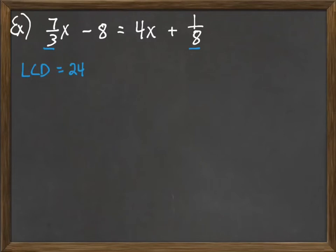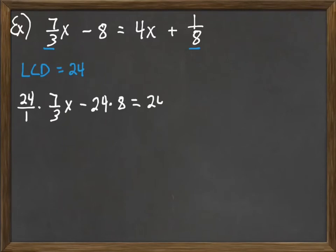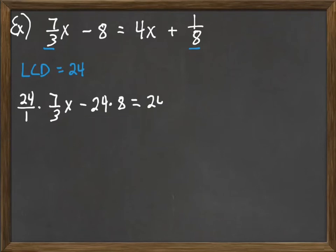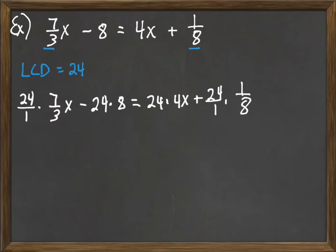We're going to make the fractions go away by multiplying the whole equation — that means both sides, each piece of both sides, since each side has two pieces. So we multiply by our common denominator, twenty-four. Seven-thirds gets multiplied: twenty-four over one times seven-thirds x. Then the eight — it's not a fraction, but we still multiply it by the common denominator, because multiplication distributes across addition and subtraction. The four x term also gets multiplied by twenty-four, and finally twenty-four over one times one-eighth.